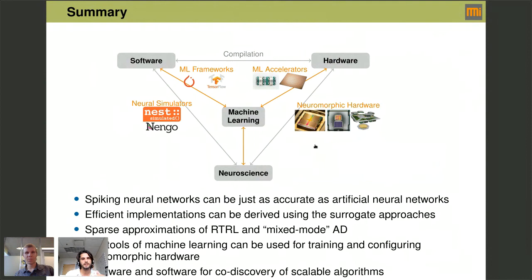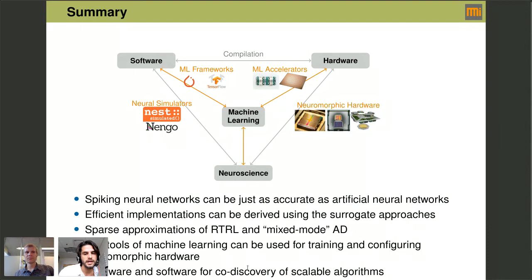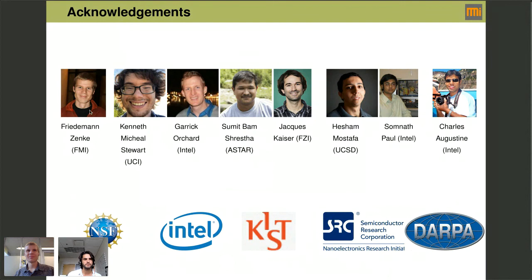To summarize: spiking neural networks in some cases can be as good as artificial neural networks, making it worthwhile to build hardware for them. We can build efficient implementations using machine learning as a guiding principle. We can use sparse approximations of real-time recurrent learning and mixed-mode automatic differentiation, and reuse the tools of machine learning for training and configuring hardware. I'd like to thank Friedemann and all my students and various collaborators. Thanks — I imagine there are a bunch of questions about that work.